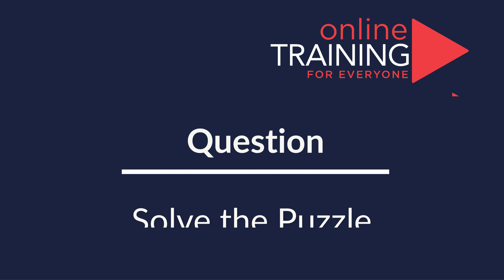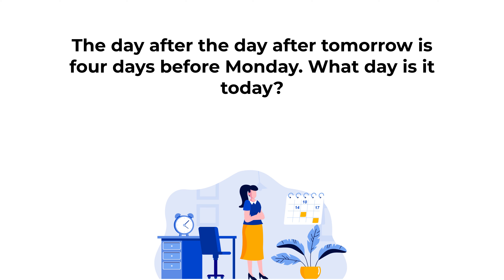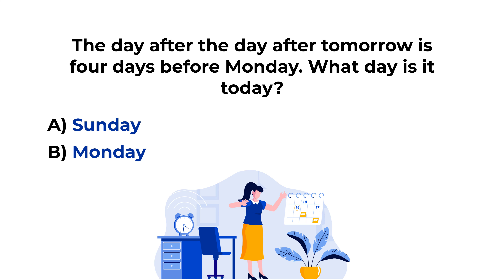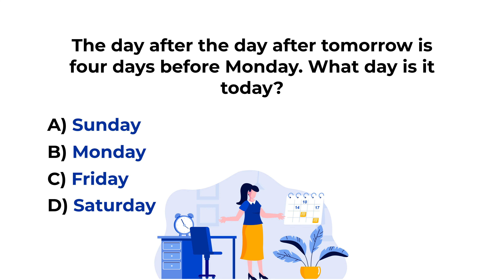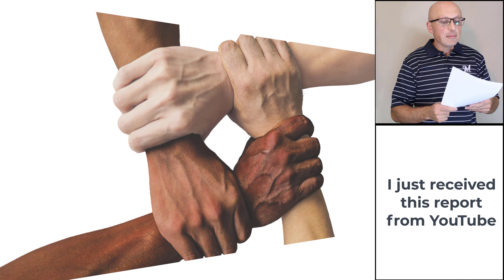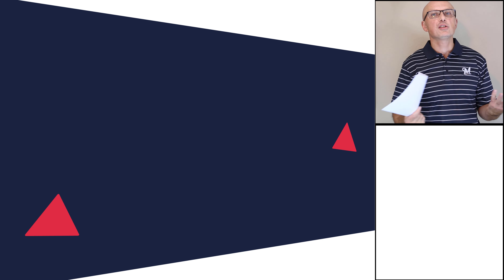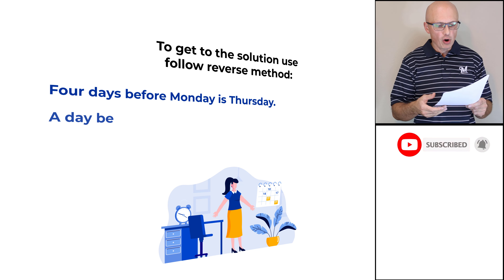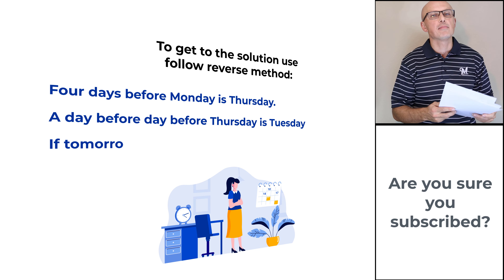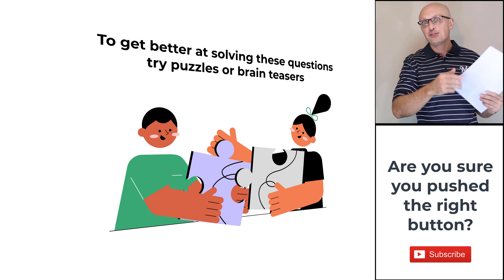Here's the cool question which tests your ability to quickly come up with answers. The day after the day after tomorrow is four days before Monday. What day is it today? Choices: A Sunday, B Monday, C Friday, D Saturday. To solve these types of problems, we need to analyze them in reverse. Four days before Monday is Thursday. The day before the day before Thursday is Tuesday. If tomorrow is Tuesday, it means that today is Monday. So the correct answer is Choice B, Monday.